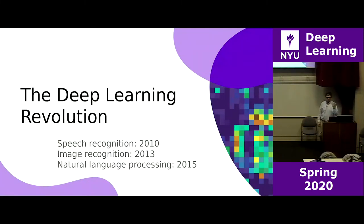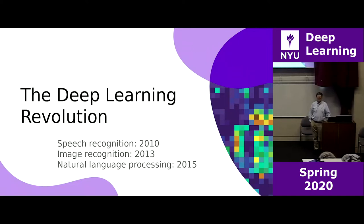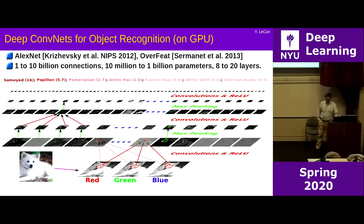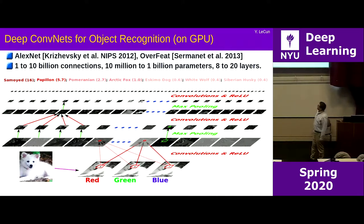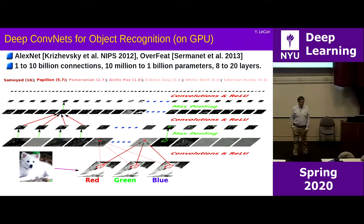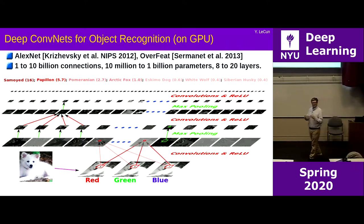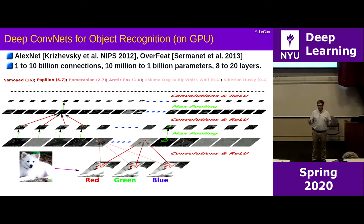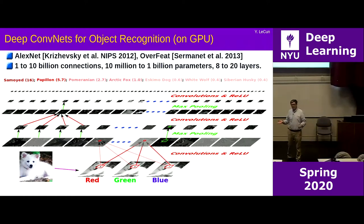Something happened around 2010, 2013, and 2015 in speech recognition, image recognition, and natural language processing — and we're in the middle of it now for other topics. I'm sad to say it didn't happen in my lab, but with friends. Starting with Yoshua Bengio and Geoff Hinton back in the early 2000s, we knew deep learning was working really well and that the community was making a mistake by dismissing it. We hadn't yet coined the term 'deep learning' — we invented it a few years later.